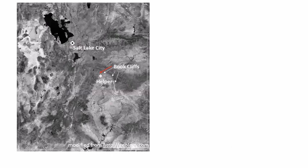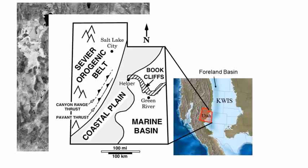Here is an outline of Utah with Salt Lake City, and the Book Cliffs are this dark trend with great exposures of classic wave-dominated shoreface successions. Focus on the town of Helper — just north of Helper there's a canyon we're going to visit. A simple cartoon shows these deposits are located near Helper, along the Book Cliffs trend, with Green River, Utah a little further south.